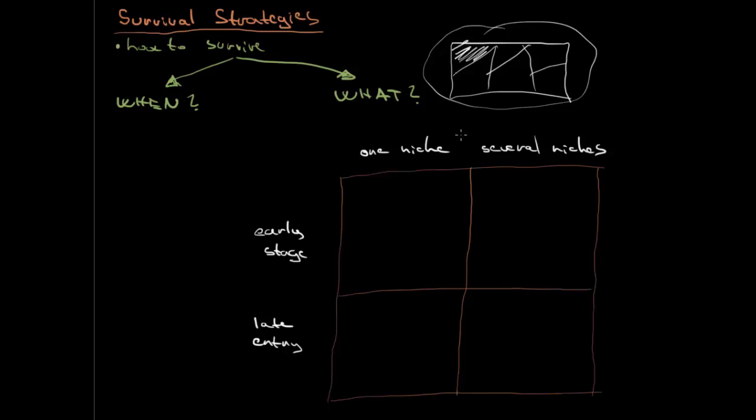We already got it. These are our two perspectives and our two answers. Now we are getting to a little bit of theory. When a company enters at an early stage, they call it the R strategy. And when there is a late entry, they call it the K strategy.